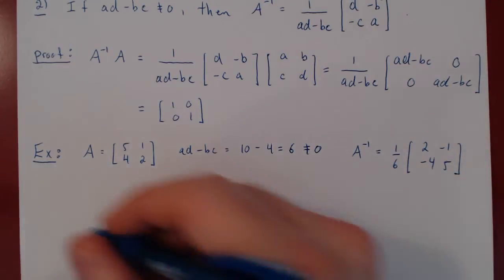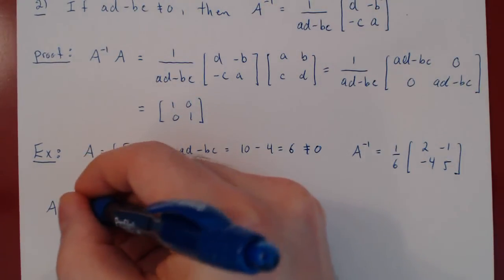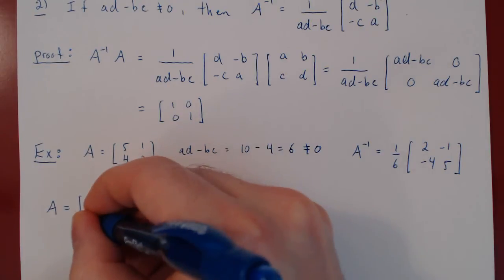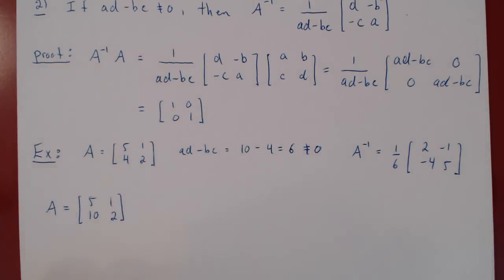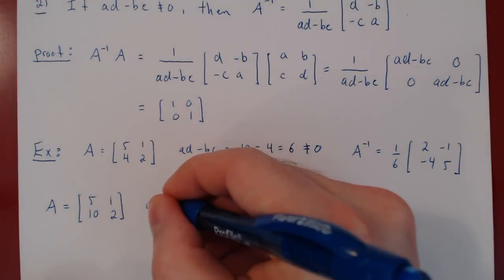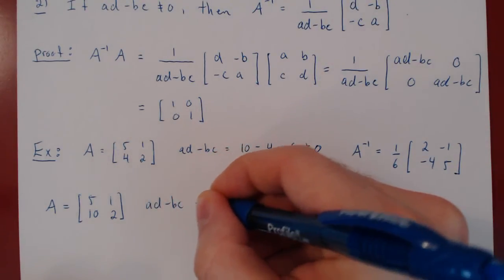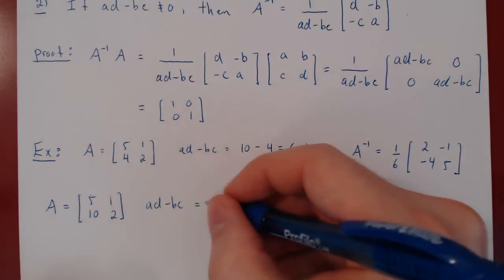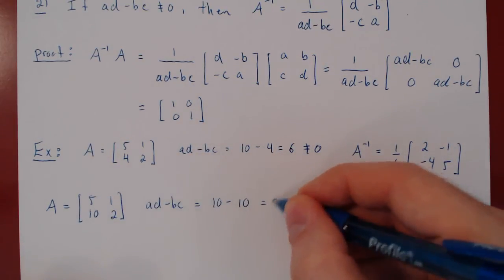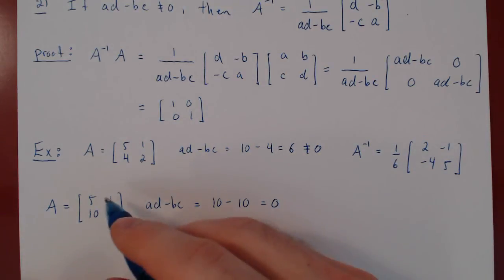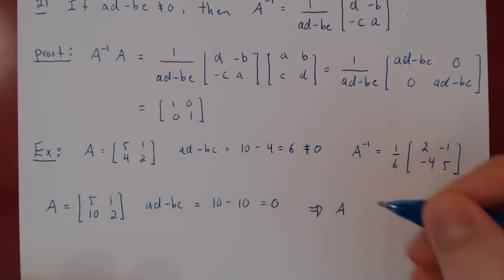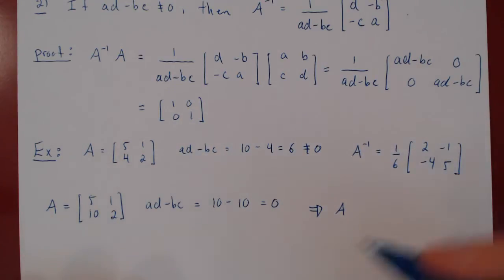One last example. What if A equals [5, 2; 10, 1]? Is this matrix invertible or singular? Compute ad - bc: 5 times 2 = 10, minus 10 times 1 = 10, which gives 0. Therefore this matrix is not invertible, so we say it is singular. The inverse of this matrix does not exist.